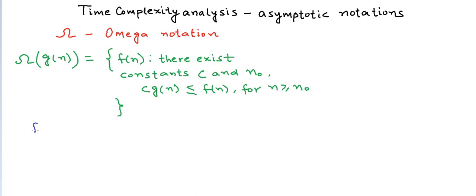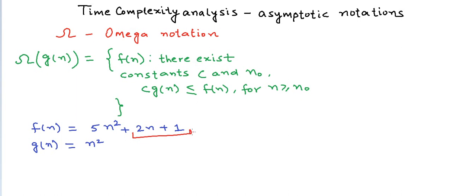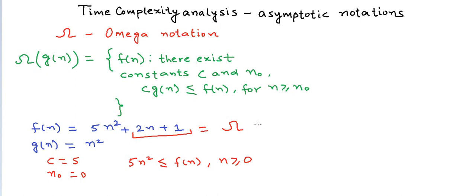Let's pick up the same example. Our function f(n) = 5n² + 2n + 1 and g(n) = n². For all n ≥ 0, 2n + 1 will be greater than or equal to 1. So if we have c = 5 and n₀ = 0, then 5n² ≤ f(n) for all n ≥ 0. Therefore we can say that f(n) is Ω(n²).